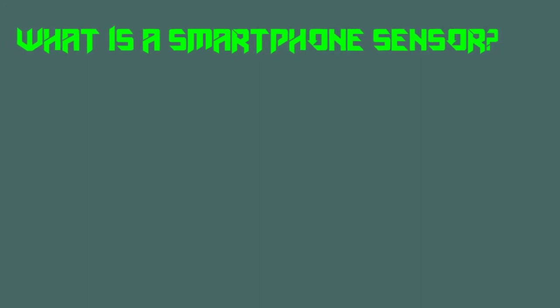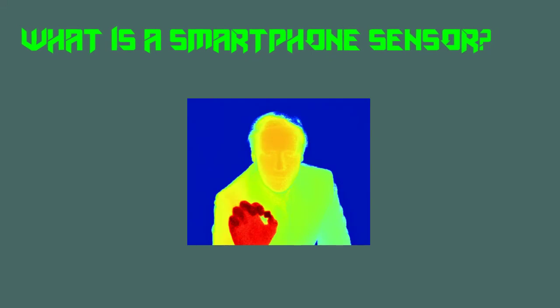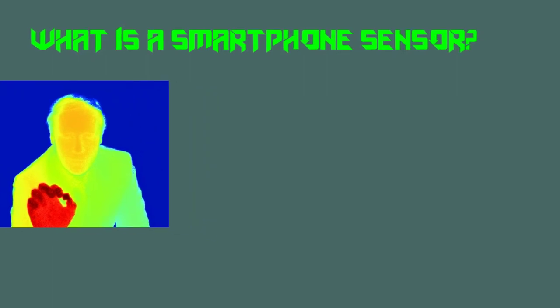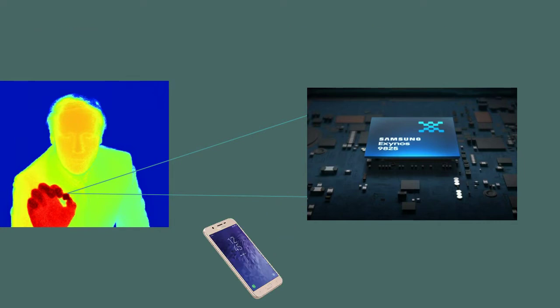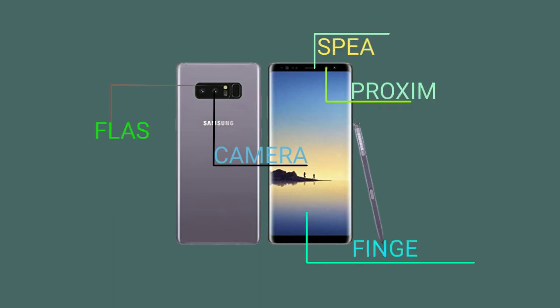A sensor is a device, module, machine, or subsystem whose purpose is to detect events or changes in its environment and send the information to other electronics, such as a processor, and bring the results to the screen for the user. Nowadays smartphones are really smart when it comes to telling a person more about what is happening by just using their sensors.